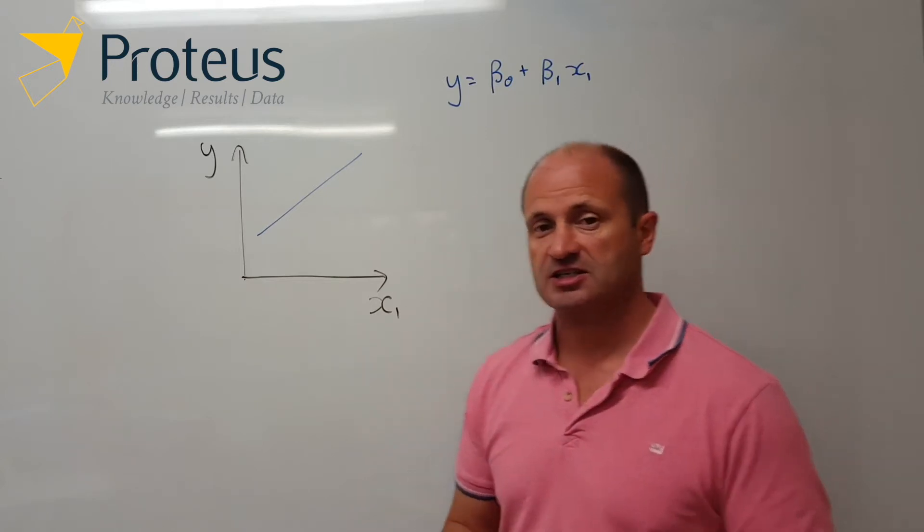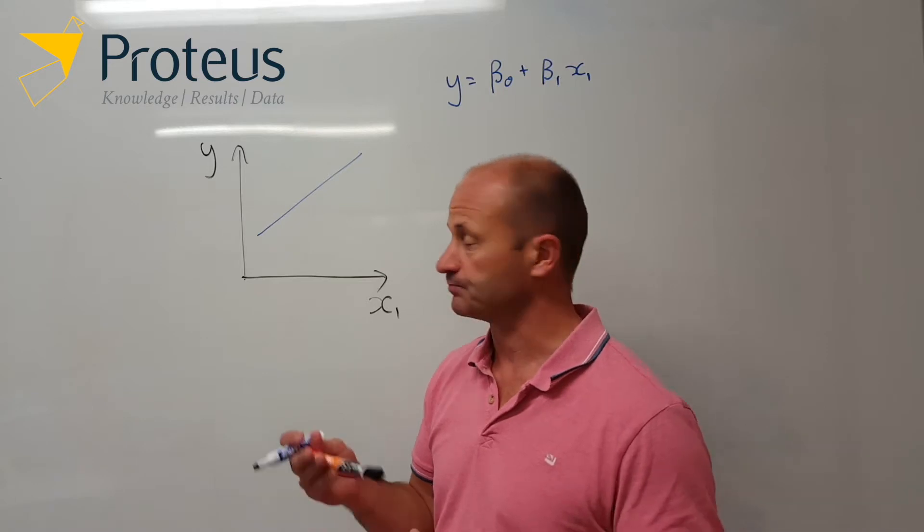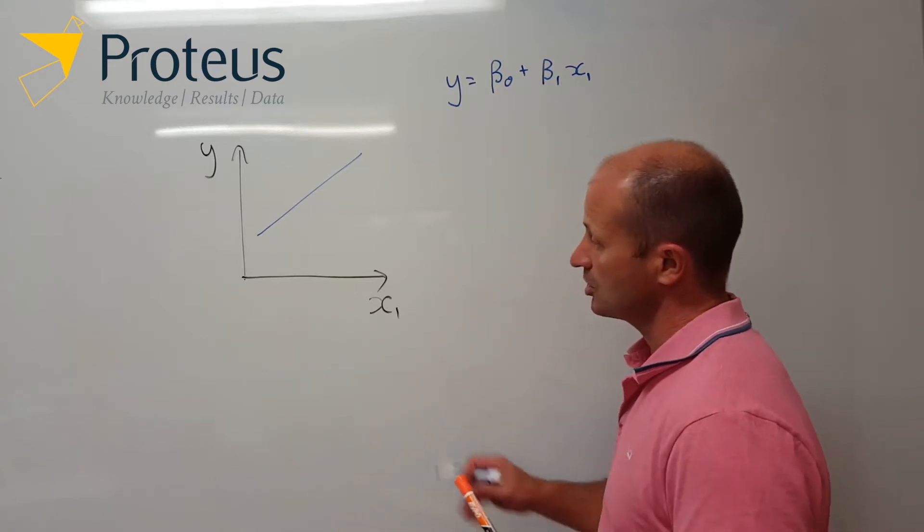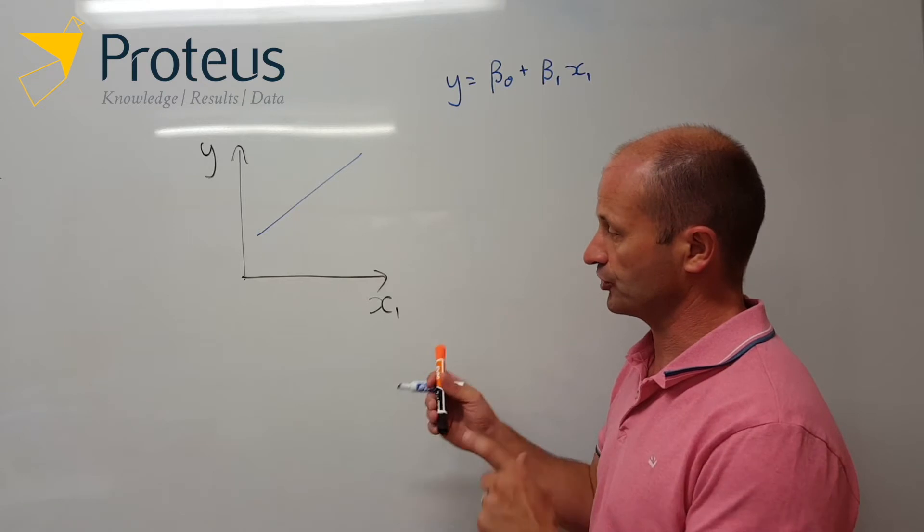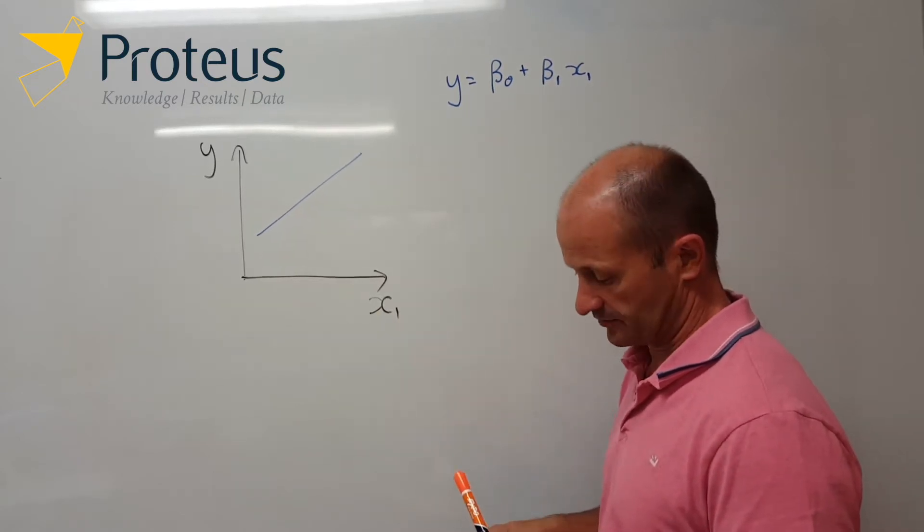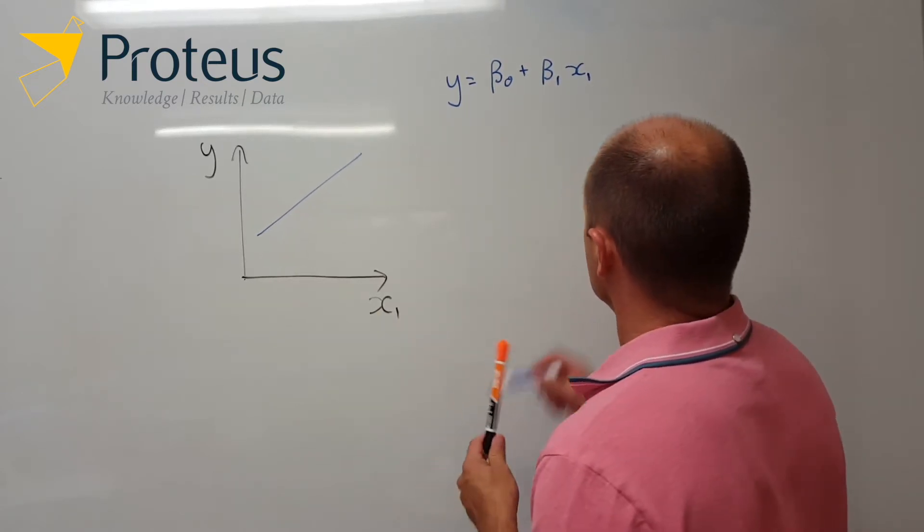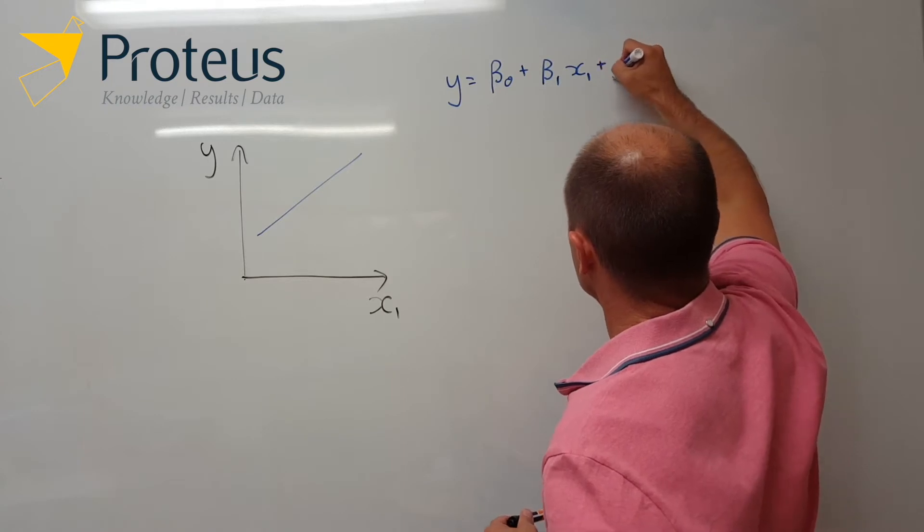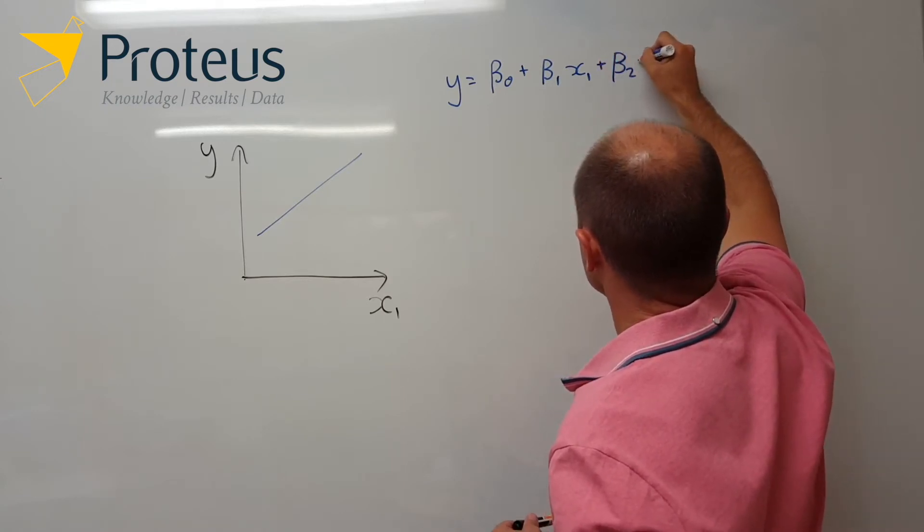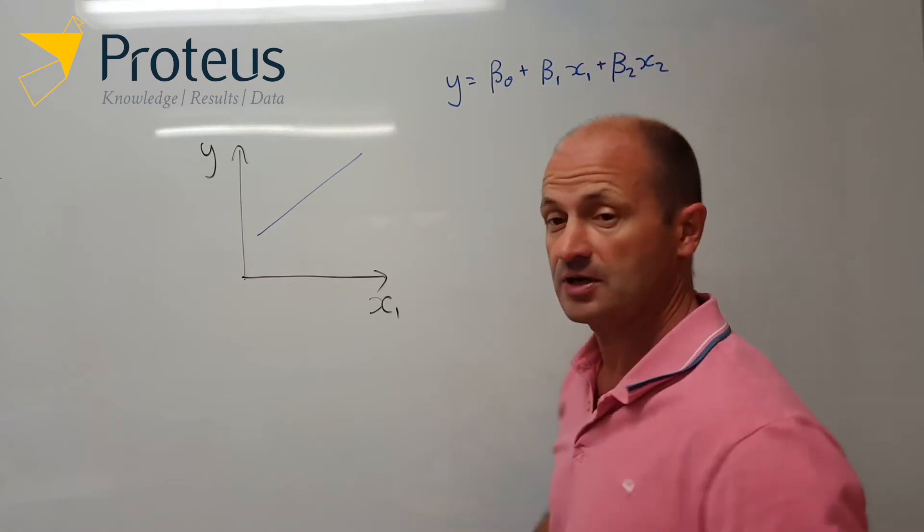Now when we have a second continuous covariate of interest, we have the same sort of relationship, but now it's also for x2 instead of x1. So our regression model, we now have this additional term in there.